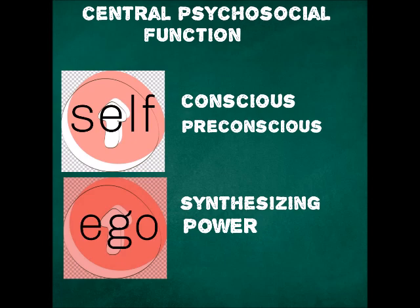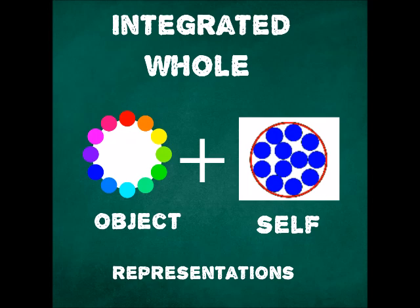The self is the representation arm of the ego, and the ego is the executive arm of the self. If the ego is developmentally arrested, the self will also be developmentally arrested. The self is mostly pre-conscious and conscious, and the ego, through its synthesizing functions, is mostly unconscious. The ego's synthesizing function does for the psyche what respiration and circulation do for the body. As the self grows and becomes whole and autonomous, it takes on ten vital capacities or functions of the self.